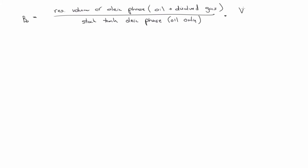So we're going to write the mass of the oleic phase under reservoir conditions equal to the standard conditions expression: the mass of the oleic phase under reservoir conditions is the density times the volume, and that's equal to the density of oil at standard conditions plus the density of gas at standard conditions times the volume of dissolved gas under standard conditions.